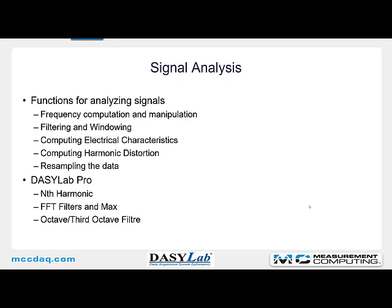The signal analysis functions within DAISYLAB in the signal analysis group include functions for analyzing signals. DAISYLAB can do frequency computation and manipulation. We can filter the incoming signal and you can also window it, which is a form of data weighting. You can compute electrical characteristics, compute harmonic distortion, and resample the data. If you have DAISYLAB Pro, it includes additional functions like the nth harmonic, FFT filters, FFT max, and the octave third octave filters.